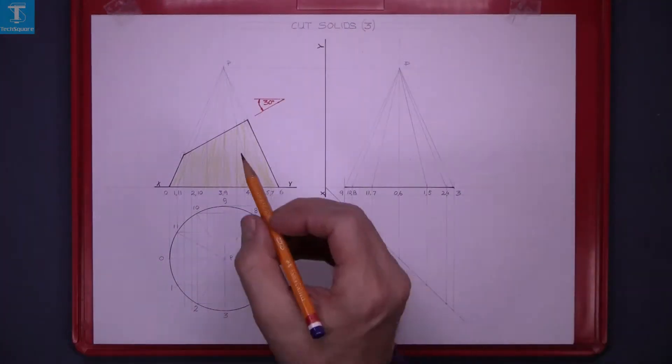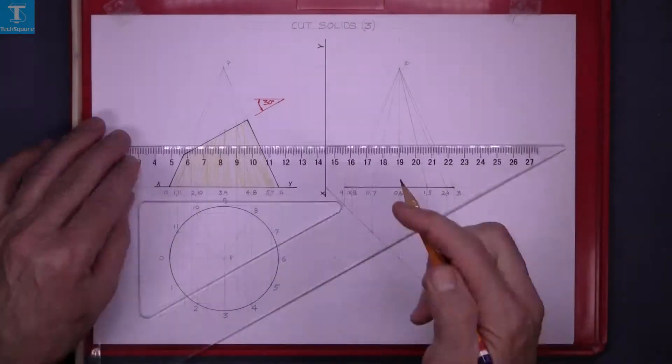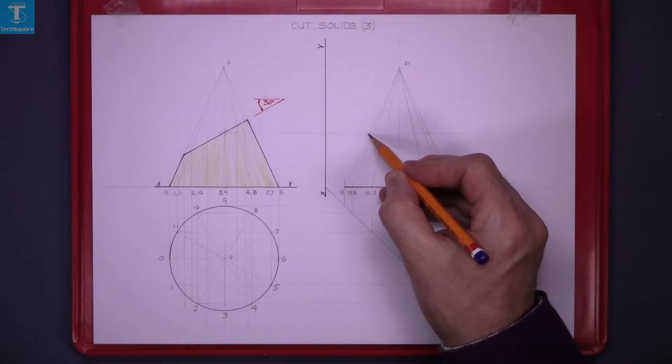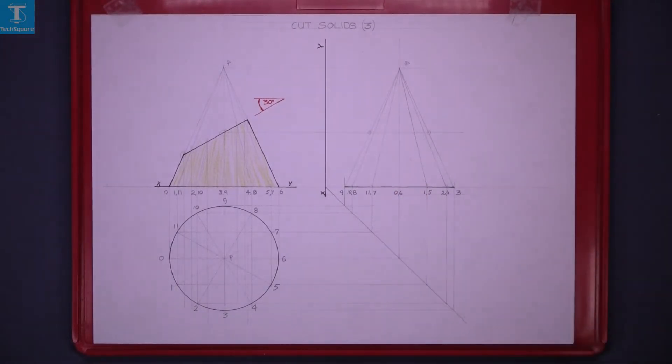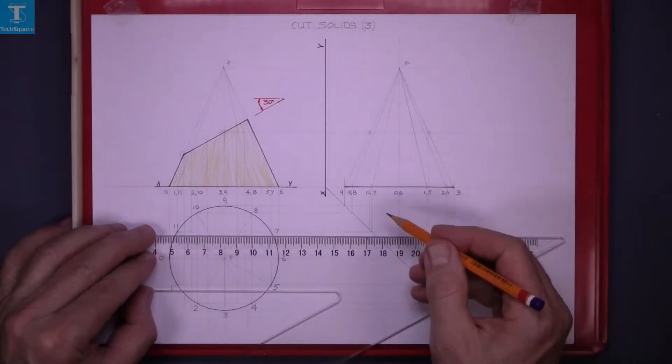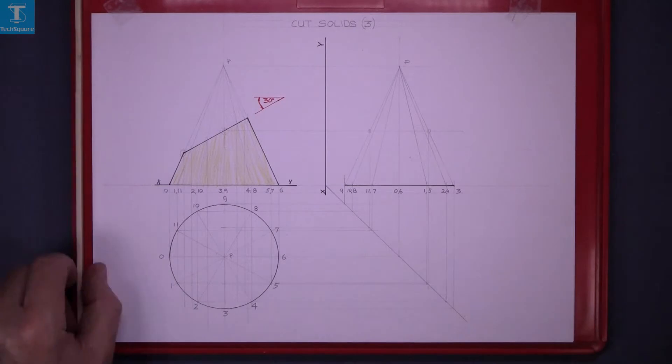So project the rest on down, bring this point across now to the end view, and now that's two points on the end view there. Project them down to the plan and that's the two points in the plan there.